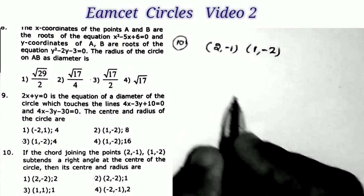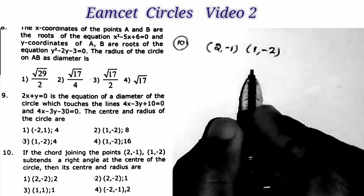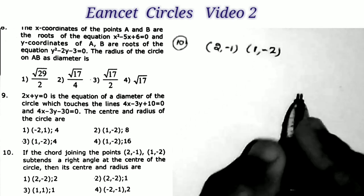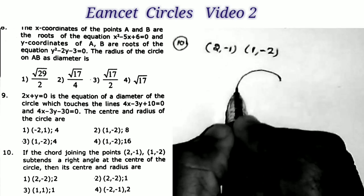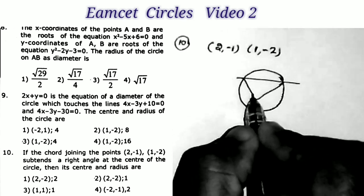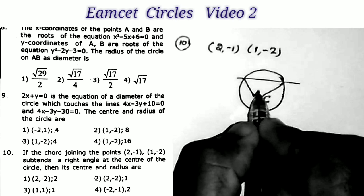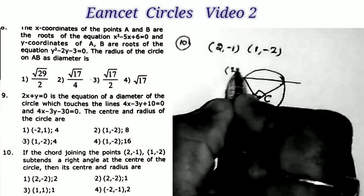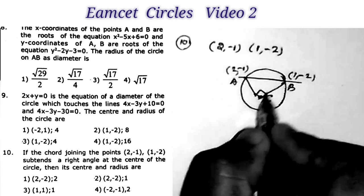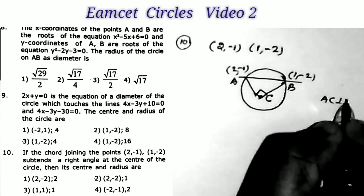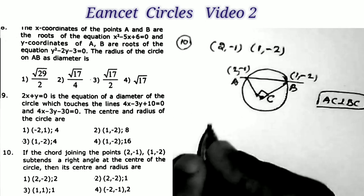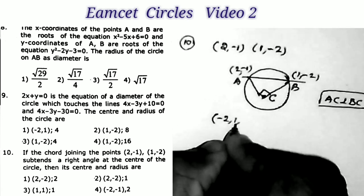Sum number 10: If the chord joining the points (2, −1) and (1, −2) subtends a right angle at the center of a circle, then what are the center and radius? Suppose the center is (a, b). Given that the chord joining these two points subtends a right angle at the center, the lines AC and BC are perpendicular to each other.